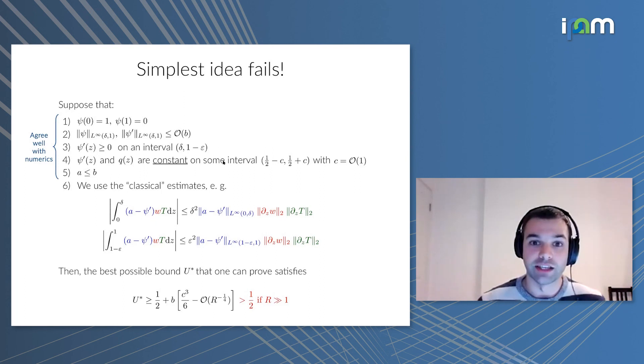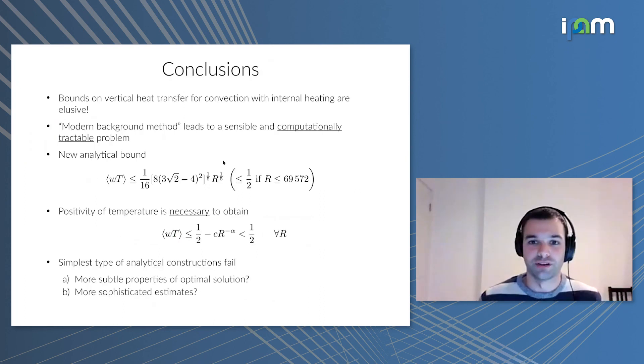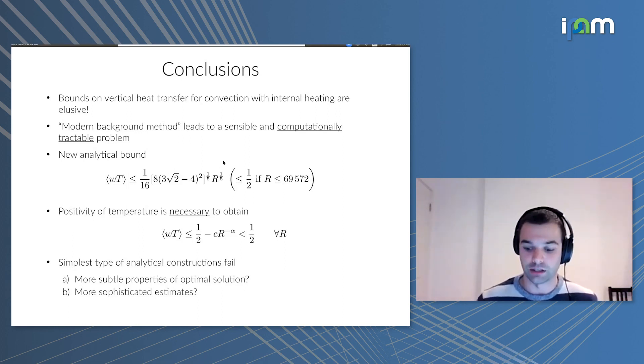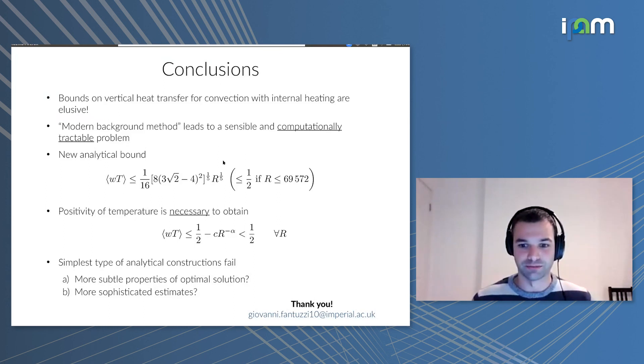So this is where we're at, we haven't solved it yet. Hopefully I've managed to convince you that this problem is quite interesting, both from a physical perspective because we don't know what happens, and from a mathematical perspective. The important aspect seems to be imposing positivity of the temperature, which perhaps if you're familiar with application of the background method doesn't always appear, especially in Rayleigh-Benard convection. You can easily prove bounds without mentioning the fact that temperature is positive. But unfortunately, we have to think a bit harder about how to actually construct these proofs analytically. So thanks for your attention, and if you have any questions or suggestions, I'd be happy to answer.